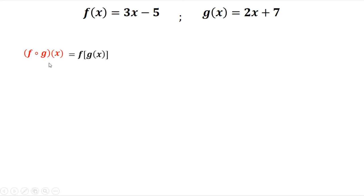This equation equals f(g(x)). From f(x), your x is g(x). So we have 3 times x minus 5, but your x is g(x), so that's 3 times (2x + 7).